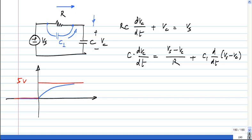If I group the variables to the left hand side and put it in the normal form, I will get R(C plus C1) dVc/dT plus Vc equals Vs plus RC1 dVs/dt.